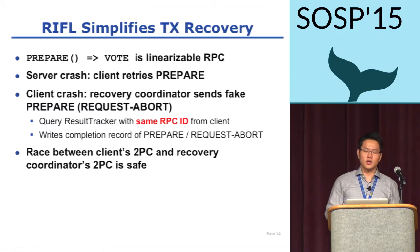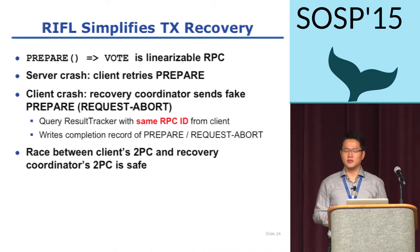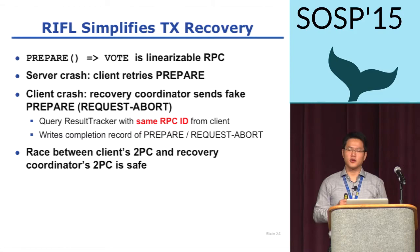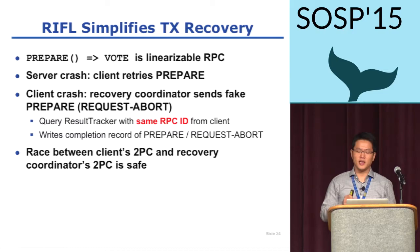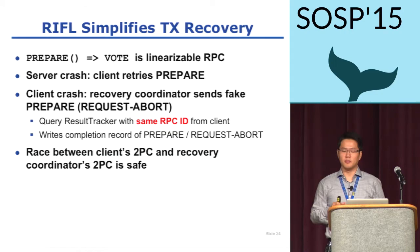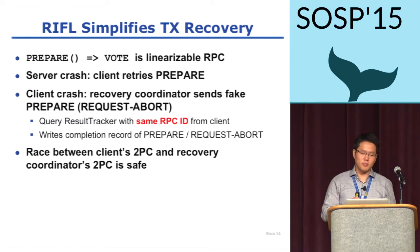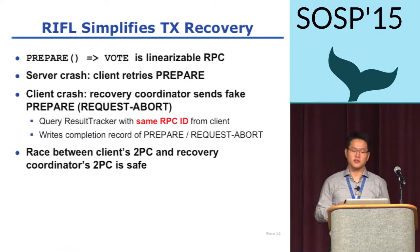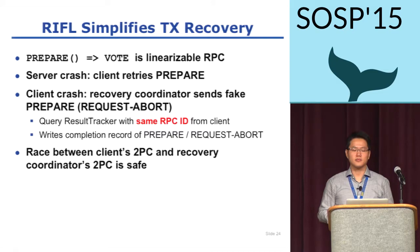To meet the durability requirement of a server's vote, we simply made prepare RPCs linearizable. Since multiple retries will always return the same vote, we can deal with server crashes simply by retrying prepare RPCs until the failed server recovers. For client crashes, we made request-abort RPCs compatible with prepare RPCs. When a client sends prepares, all participant servers are informed about the RPC IDs for prepare RPCs. Riffle handles request-abort by using the same RPC ID initially assigned by the client and writes the completion record of prepare. Consequently, the concurrent commit protocol driven by a client and the recovery master will always result in the same outcome without any problems.